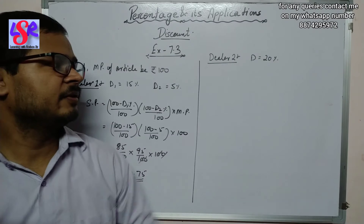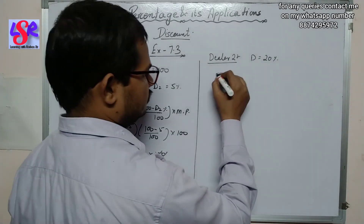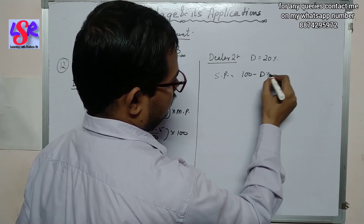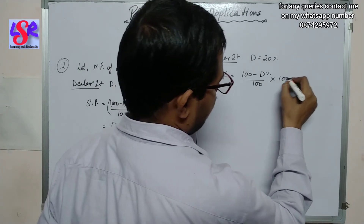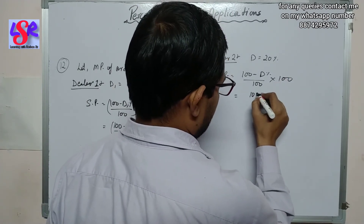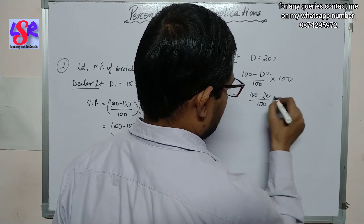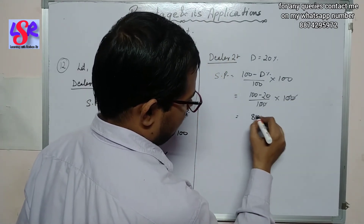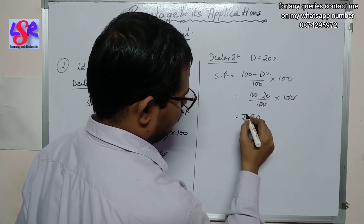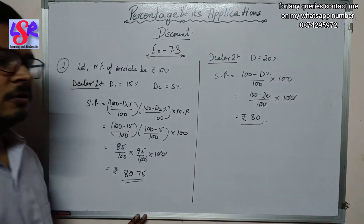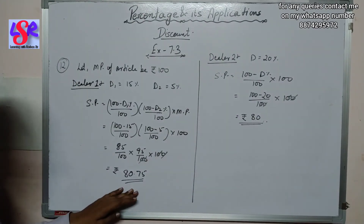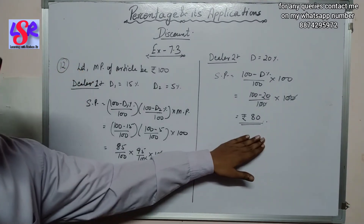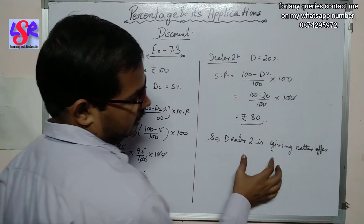For dealer two, the discount is 20%, so SP = (100 − 20)/100 × 100 = rupees 80. We are paying rupees 80.75 with dealer one but only rupees 80 with dealer two, so dealer two is giving the better offer.